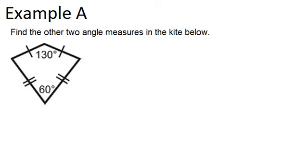In example A, it says, find the other two angle measures in the kite below, and it's given that we have one 130 degree angle and one 60 degree angle over here.